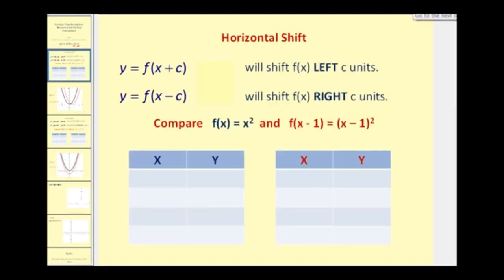Let's first talk about a horizontal shift, which means the graph will be shifted left or right. y equals f of the quantity x plus c will shift f of x left c units, and y equals f of the quantity x minus c will shift f of x right c units. This may be the opposite of what you might think: if you add c units to x, the function shifts left, and if you subtract c units from x, the shift is right.